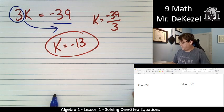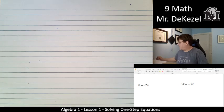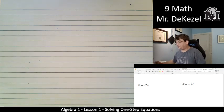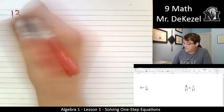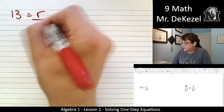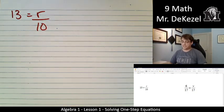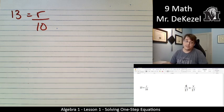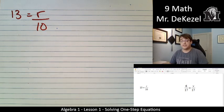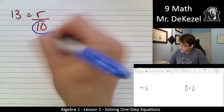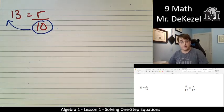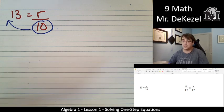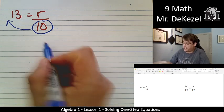So this is moving stuff across the equal sign once. That's what we're doing here. We have 13 is equal to r over 10. We want to get r all by itself. So we need to move the 10 over. The 10 is on the bottom on this side, so I'm going to move it to the top on the other side, right? Move it across the equal sign, you do the opposite. If we're dividing here, we multiply.